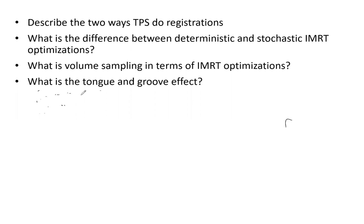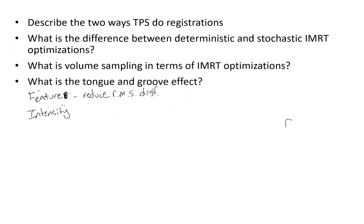There are two ways of doing TPS registrations. Number one is feature-based, and number two is intensity-based. For feature-based, you're essentially trying to reduce the root mean square distance. You align structures, and that's going to minimize the root mean square distance to those points, giving you registered and fused images.